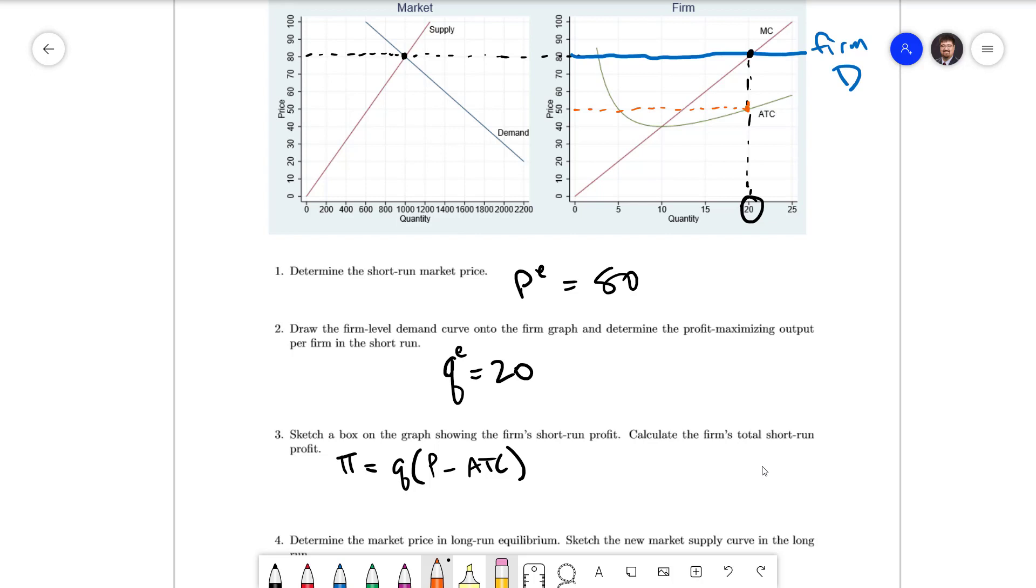And so our profit box is going to be this box right here, with a base of the quantity of 20 and height of the difference between the price and the average total cost at 20.